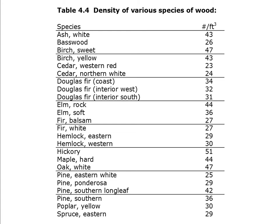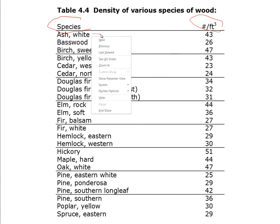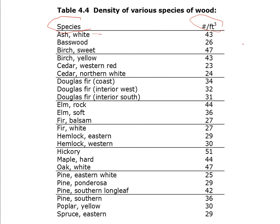Wood comes in a variety of species, and these species typically have different densities, hardnesses, and yield stresses. Here we have a list of species and densities in pounds per cubic foot. White ash is a very hard, strong hardwood, typically used in baseball bats so it's able to handle a lot of percussion and stress. It's quite dense at 43 pounds per cubic foot.